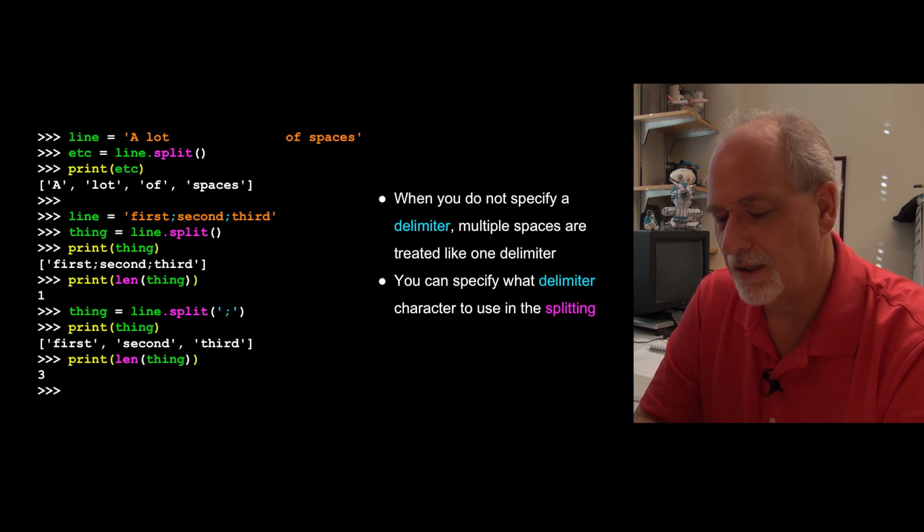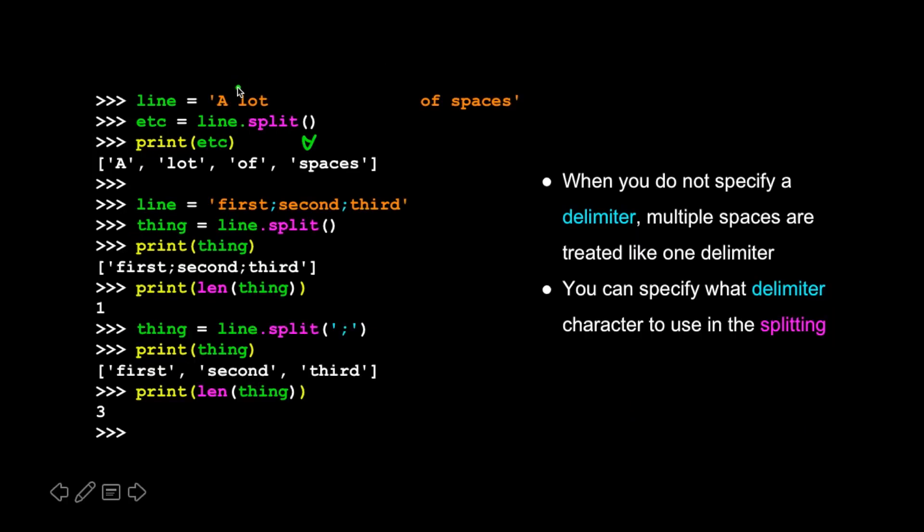Just a couple of bits about this and how it works. Split with no parameters here, it looks for spaces, but it also treats a bunch of spaces as a single space. And so it's pretty smart about that, and so even though this has a lot of spaces between lot and of, you only see lot of, all the spaces are gone. It does something special about spaces. It's really white space, so tabs or new lines or other characters would also qualify in split, basically.